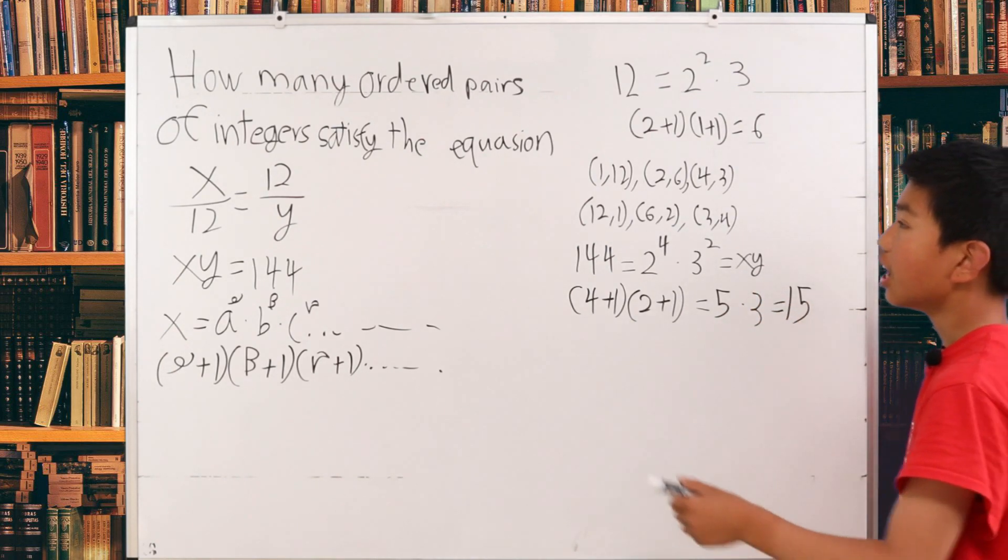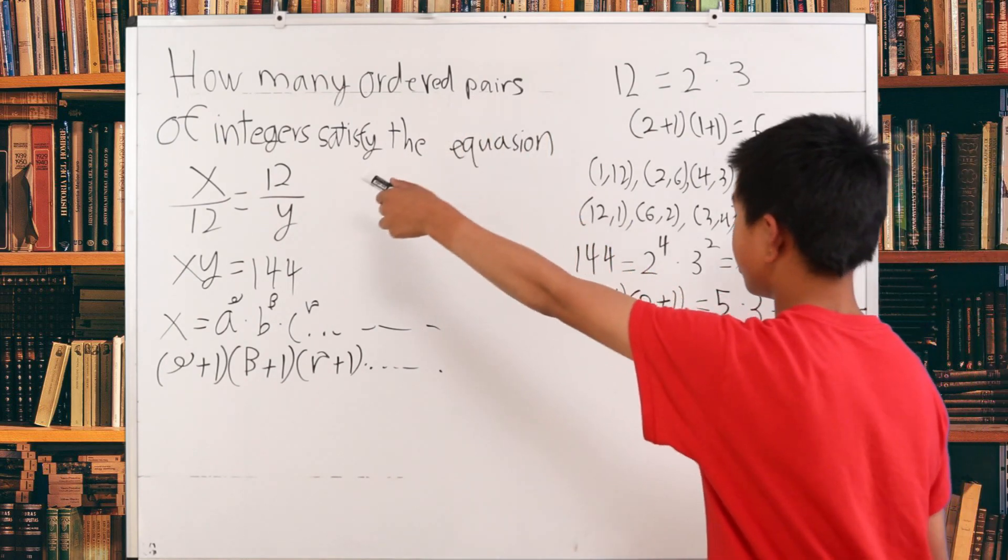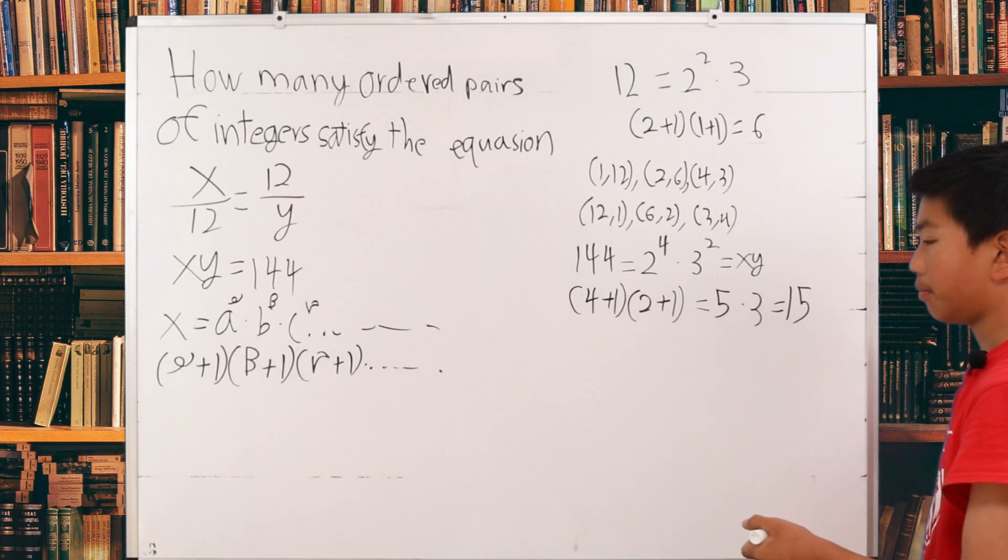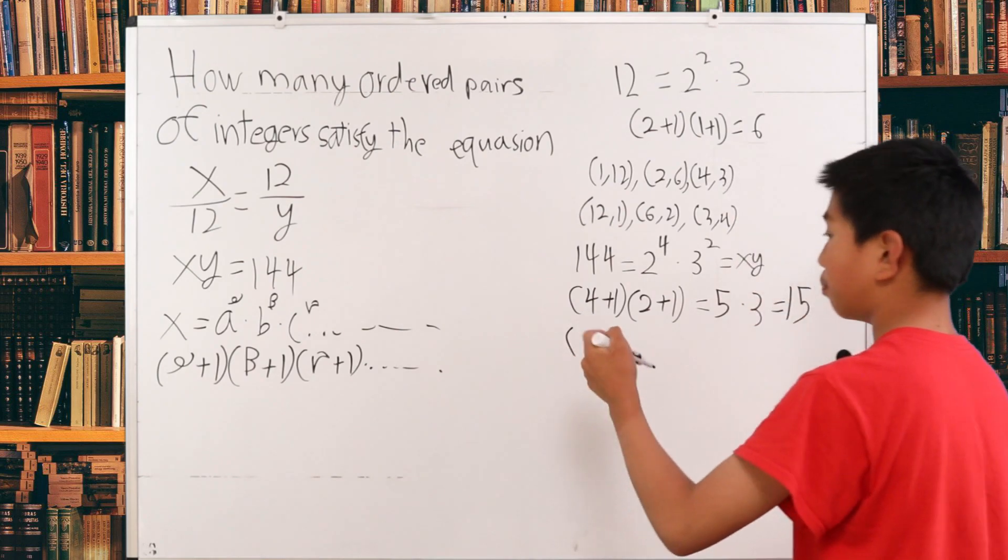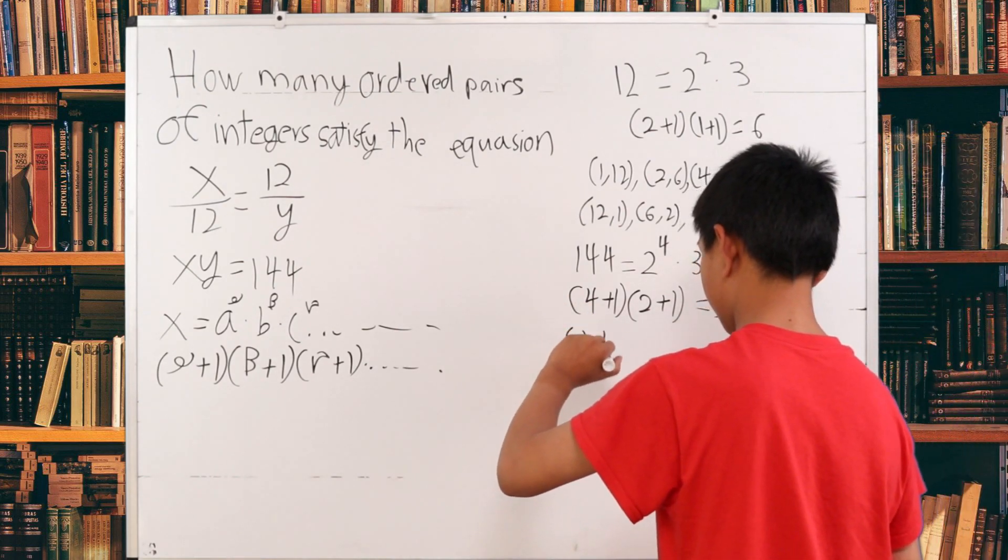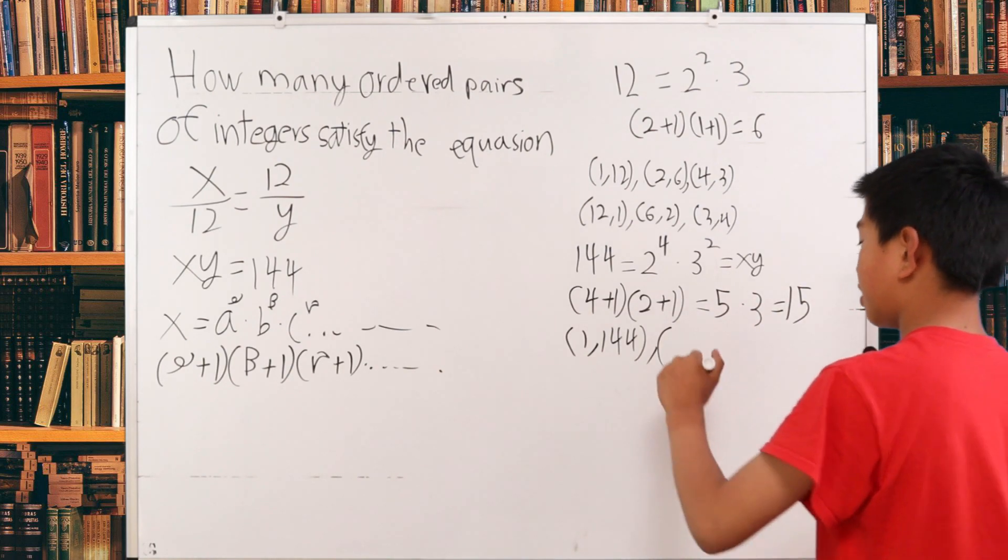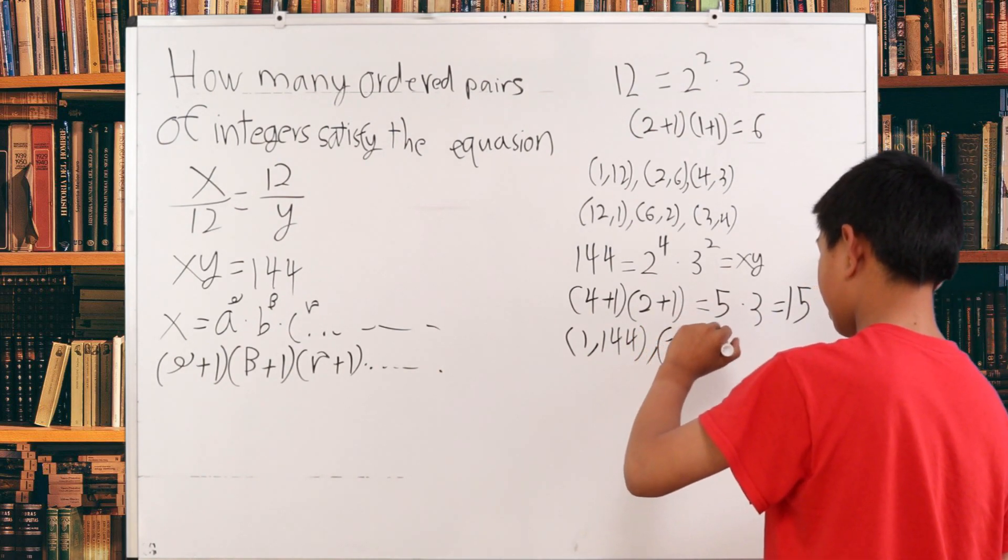We want to find how many ordered pairs of integers. Not positive integers. Integers. This is the positive integers constraint. So let's just break it up. So there's 1 and 144. But this can also be written as negative 1 and negative 144. They yield the same result as 144.